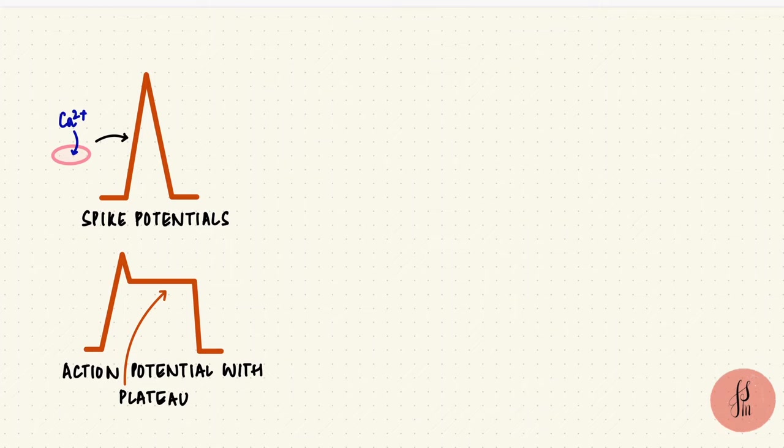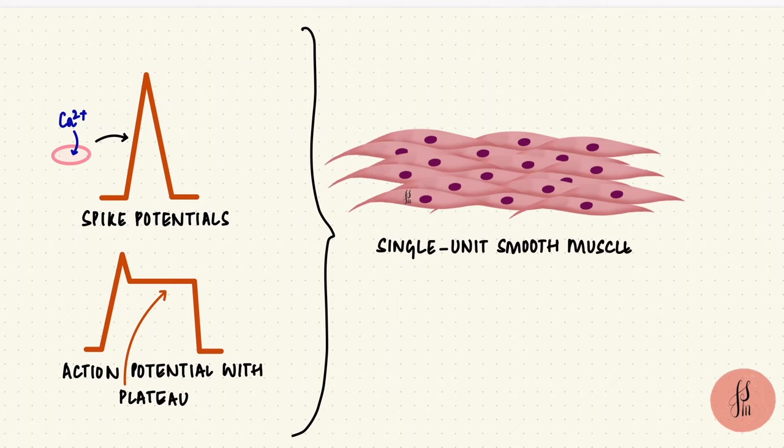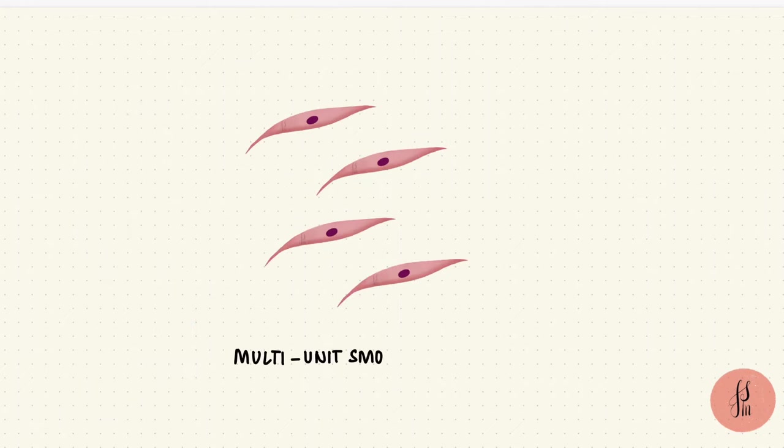A little side note here: these kinds of action potentials are seen in single-unit smooth muscles, which contract together as a unit. Multi-unit smooth muscles have cells that are more independent. These cells are too small to actually have action potentials. There's local depolarization which creates a junctional potential that spreads through the muscle fiber, causing it to contract.